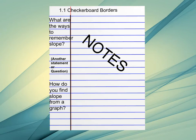Here is an example of what your notes should look like for this section. We're still in 1.1 Checkerboard Borders, and the two videos before this were why do we solve the same things to both sides and how do you solve an equation with variables on both sides.